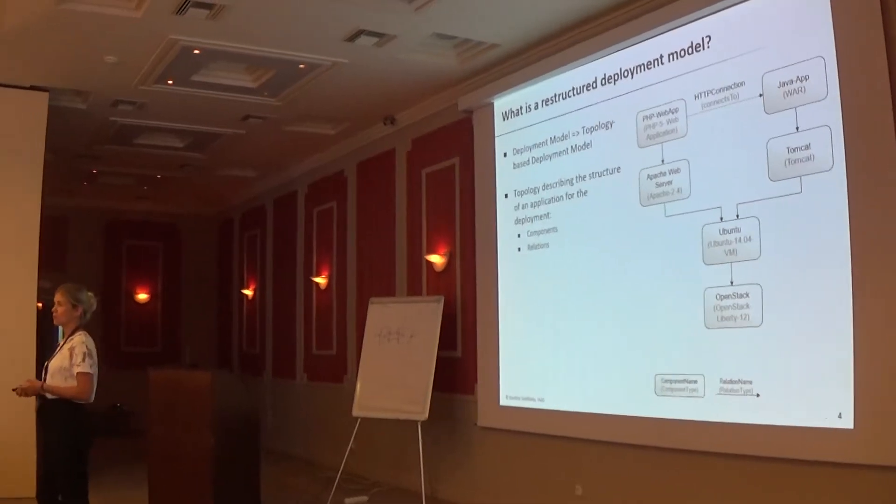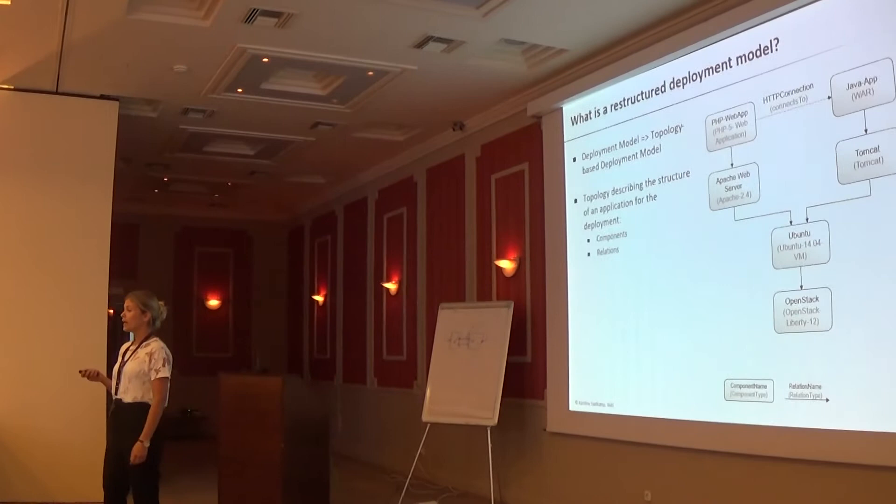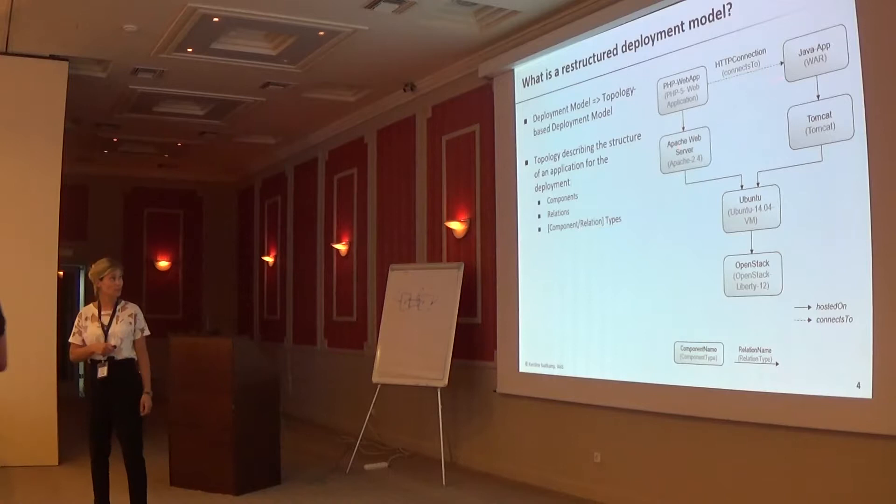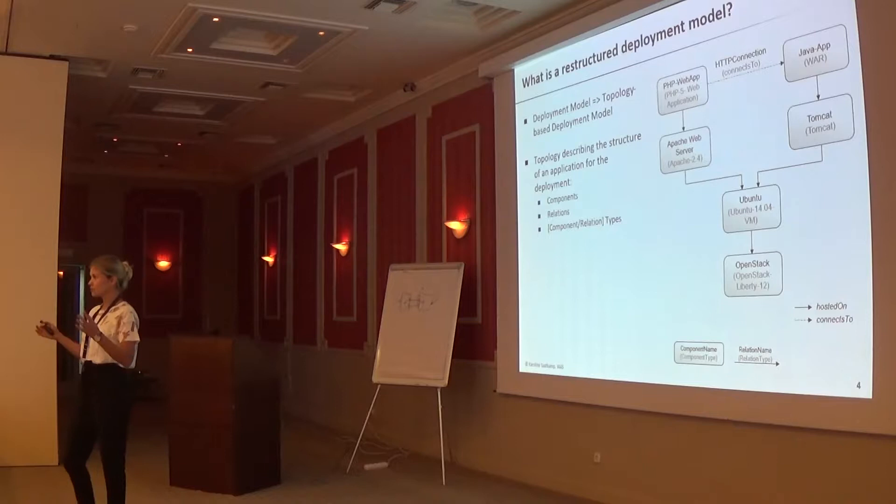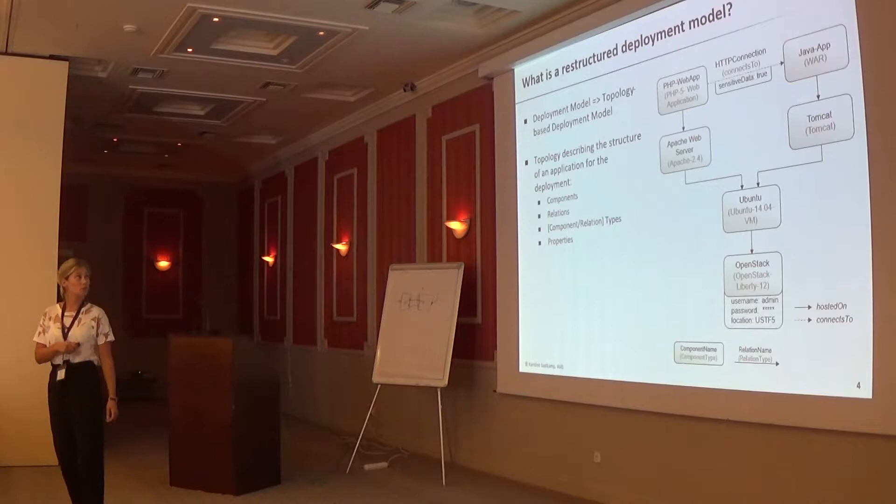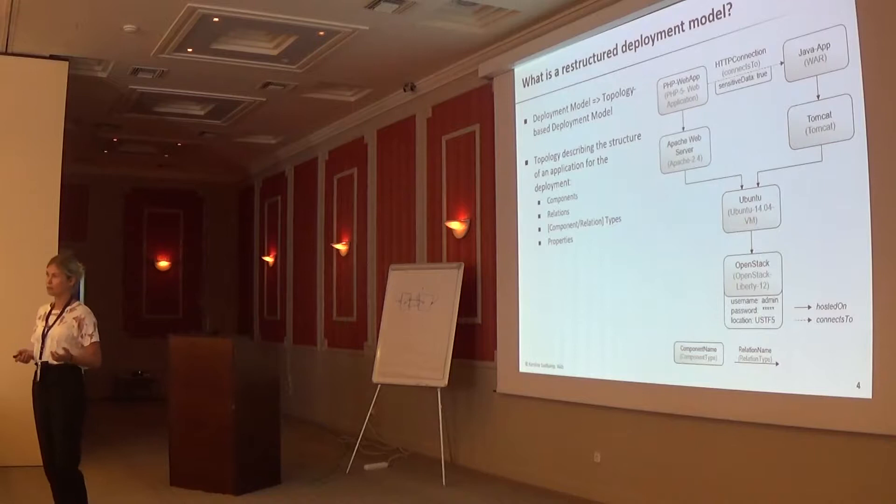Components and relations as you can see here in the example - the components as well as the relations have specific types. Here we have a PHP application, a connects to relation, and some post on relations. We can describe the structure of the application. Furthermore, we have properties we can add, for example the relation has sent data which is exchanged here. For the OpenStack they require a username, a password, and they are in a specific location here.